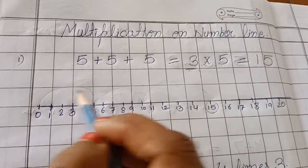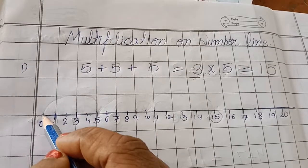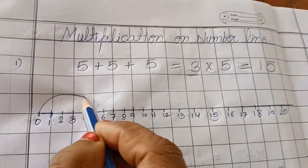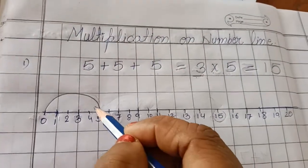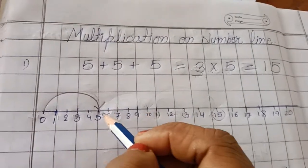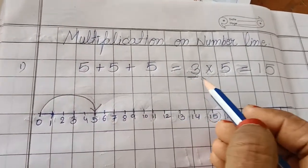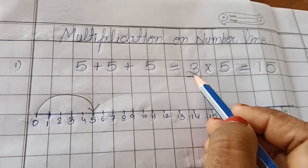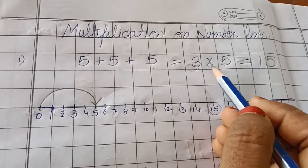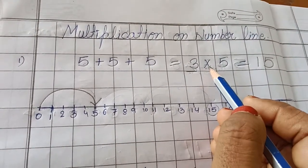So in our first jump we reach to 5. And how many jumps do we have to take? We have to take 3 jumps of 5 steps each.